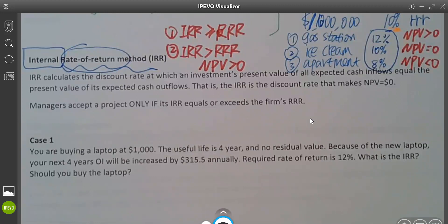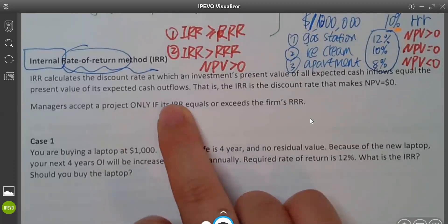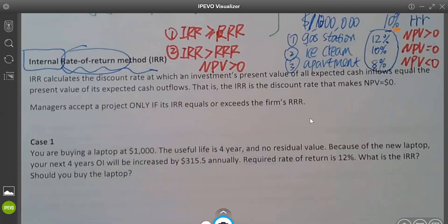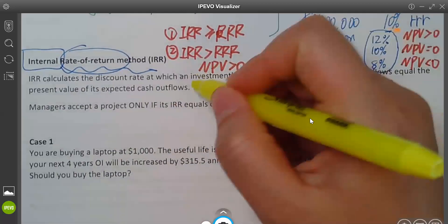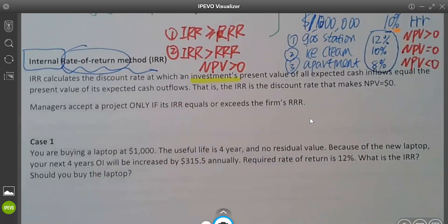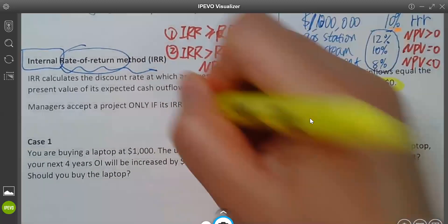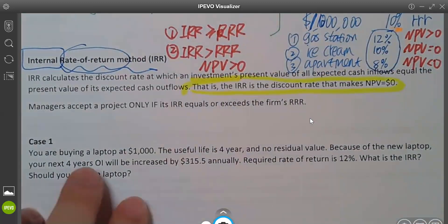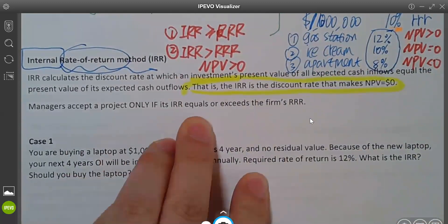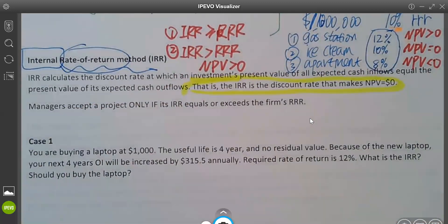We talked about how do we decide to accept a project or reject a project? We said we compared IRR with RRR. And we also said if IRR is larger than RRR, that also indicates that NPV is positive. So I'm not really going to read this, but make sure we talk about that the IRR actually calculates the rate for each specific investment, each specific project. We said we will get the IRR when the NPV equals to zero.